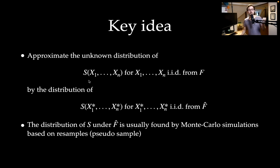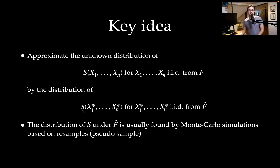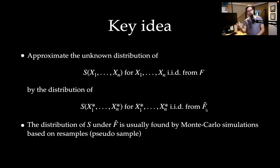In more detail: let's approximate the unknown distribution of my statistic. Assuming IID data from this unknown distribution, I want to know the unknown distribution of my statistic. I approximate this by computing the statistic on resampled data, where I resample from an approximate distribution F-hat. We typically find the distribution of S under this F-hat by so-called Monte Carlo simulations — doing something a large number of times. These resamples are also called pseudosamples.